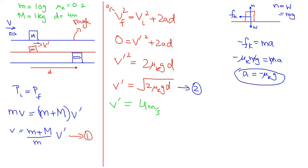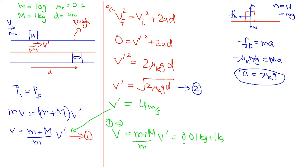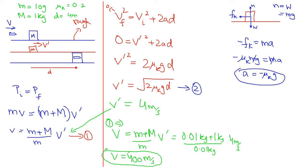Now plugging v prime into equation one: v equals (m plus M) divided by m, times v prime. With m equals 0.01 kg, M equals 1 kg, and v prime equals 4 m/s, we get v equals 400 meters per second — which makes sense because bullets move fast.